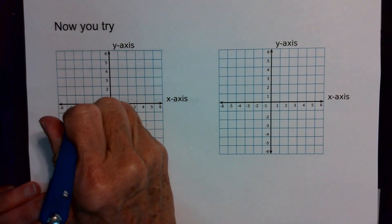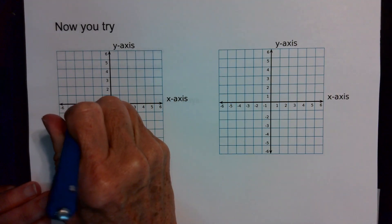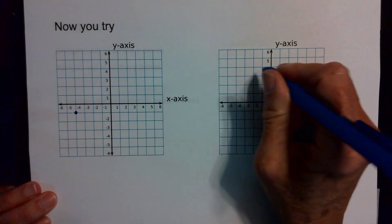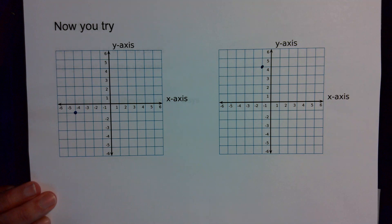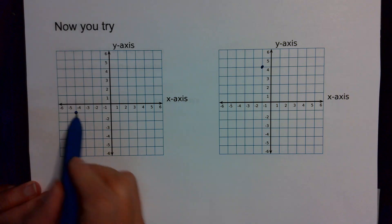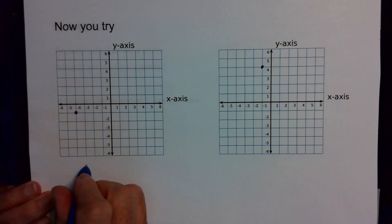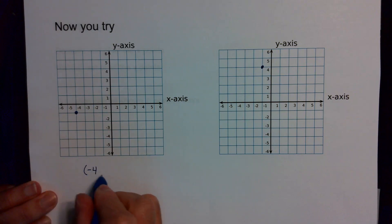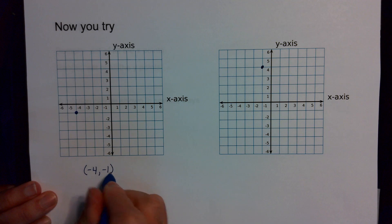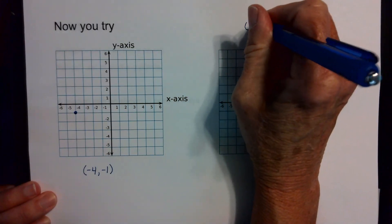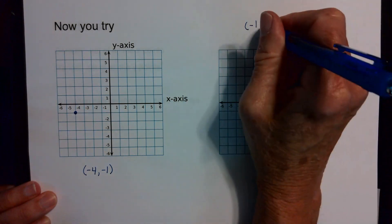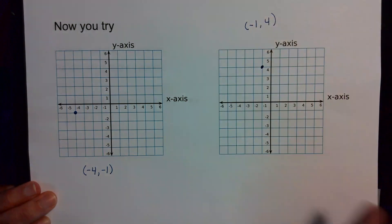I'm going to put a point on here and I want you to name it — pause the video and come back to decide whether you named it correctly. This point right here is the point (negative 4, negative 1). This point right here is the point (negative 1, positive 4). Those should have been your answers for those two.